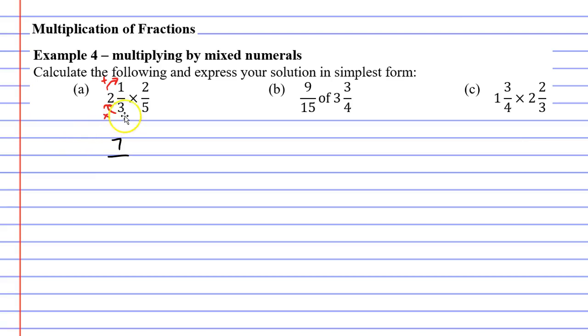What's our denominator going to be? Well the denominator stays the same it was 3 before so our improper fraction has a denominator of 3 as well. We have the fraction 7 over 3 times the other fraction 2 over 5.